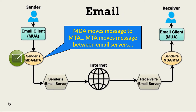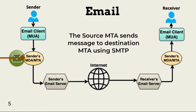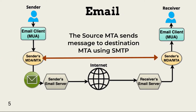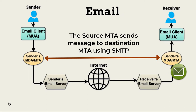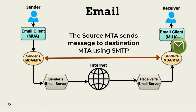MTAs move messages from one email server to another. They use DNS MX records to locate destination addresses. The sending MTA uses SMTP to send the message to the target email server's MTA. The receiving server's MDA receives the message from the receiving MTA and places it in the receiver's inbox.